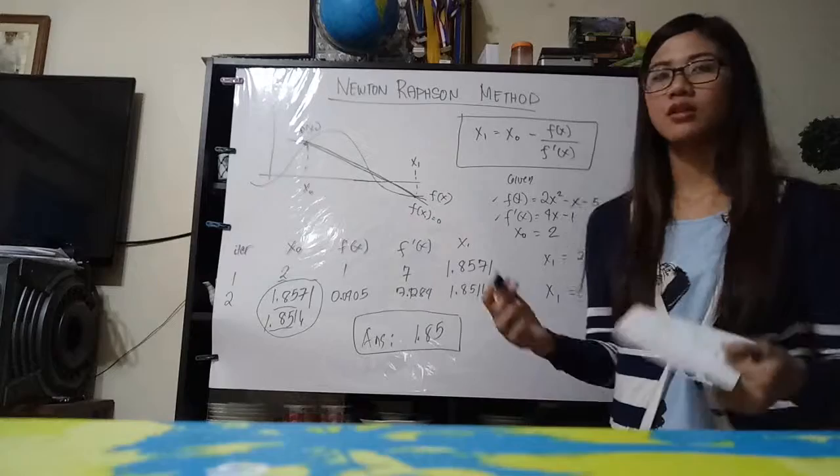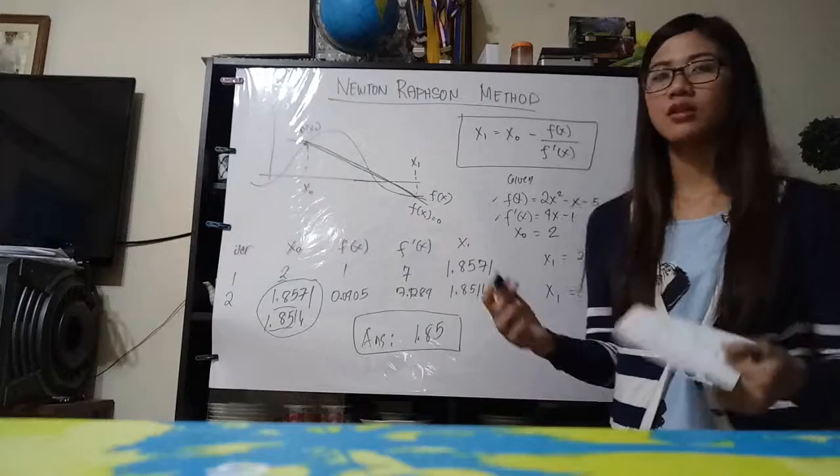Now, if we iterate and iterate, we get a lot more closer to the real value. So that is the Newton-Raphson method. I hope you understand this very basic explanation. Thank you. Bye.